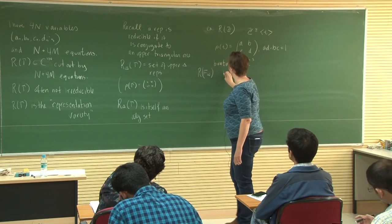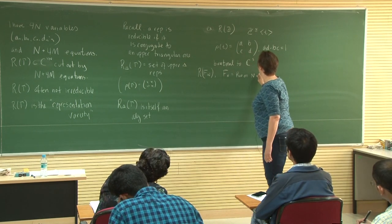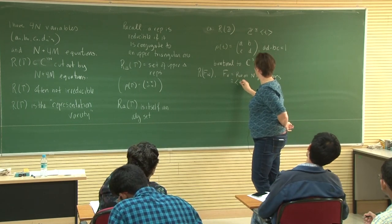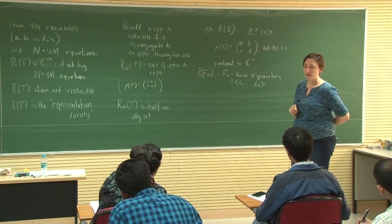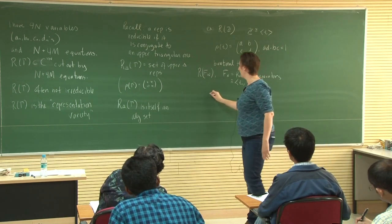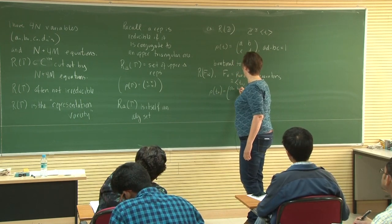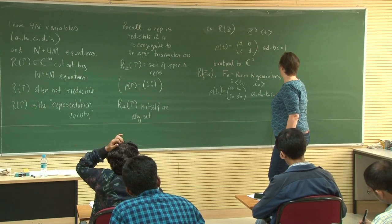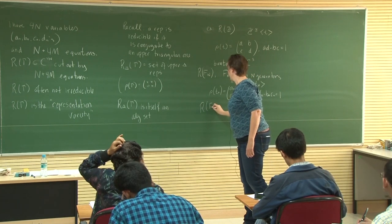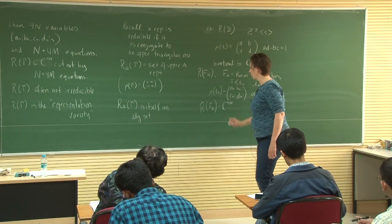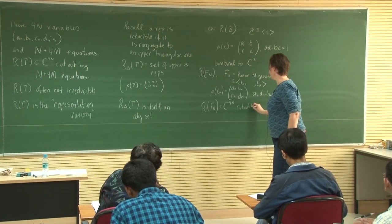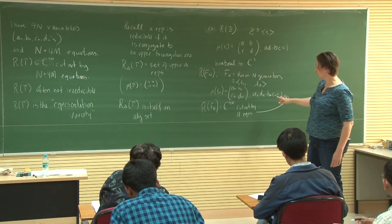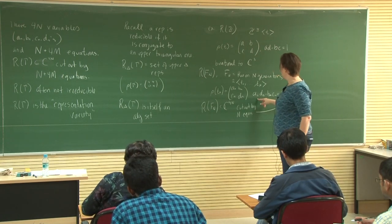Let's look at the representations of F_n, the free group on n generators. F_n is just generated by T₁ through T_n — there are no relations to be satisfied, and I just need rho of each T_i to be some generic matrix satisfying the determinant condition. So R(F_n) sits inside ℂ^{4n}, cut out by the n equations that specify determinant 1. You can see it just looks like ℂ³ to the n.